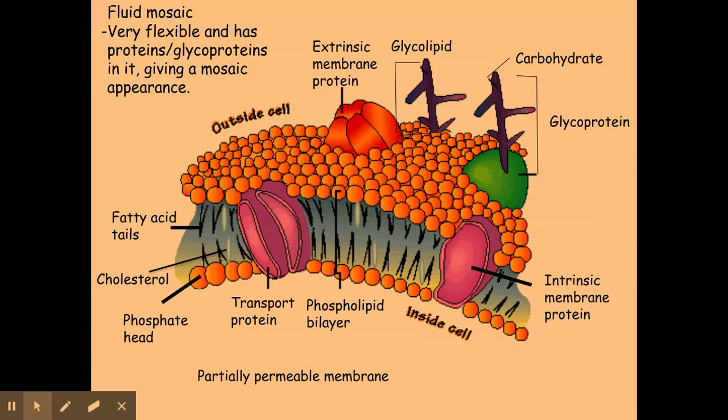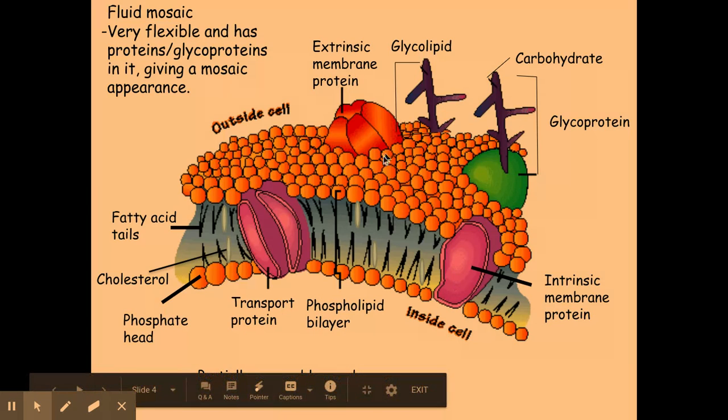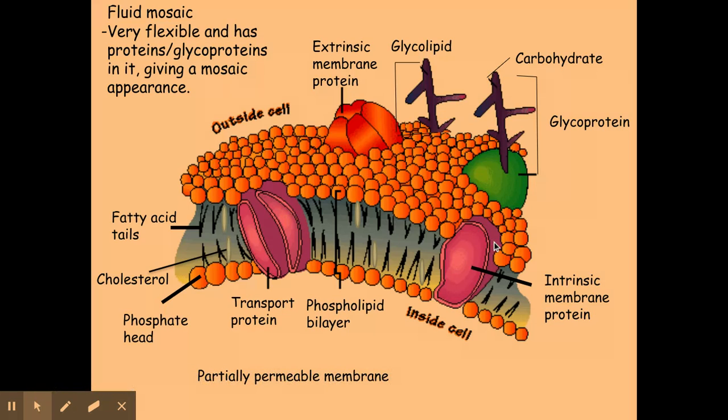This is our phospholipid bilayer. We're going to go through the different components, but before we do, we need to understand why it's called the fluid mosaic model. It's called fluid because the components in the membrane move around and it is very flexible. It's also called mosaic because these proteins that are embedded in the membrane give it a mosaic look and feature.